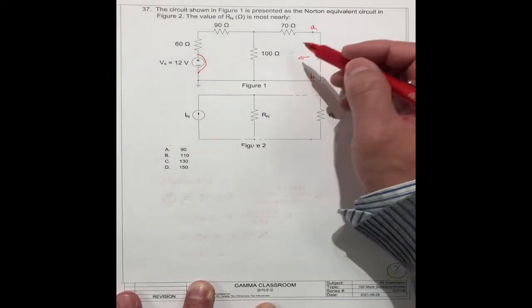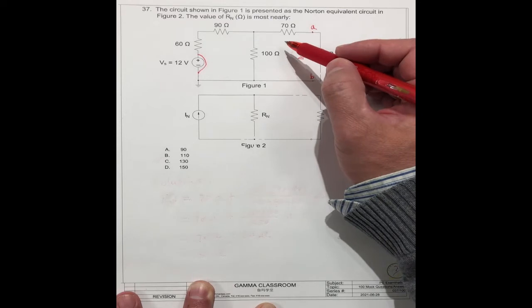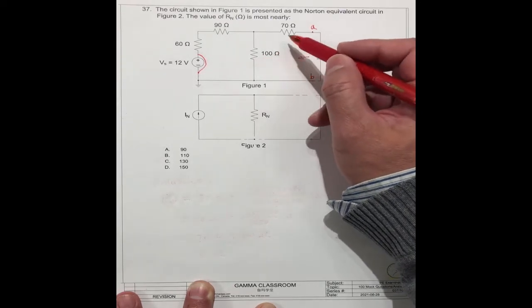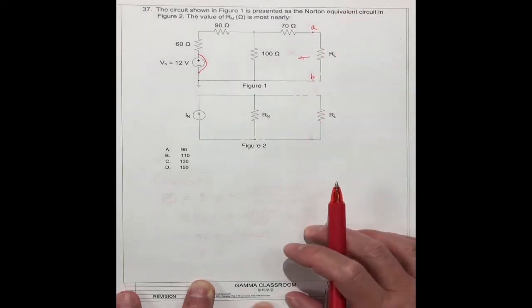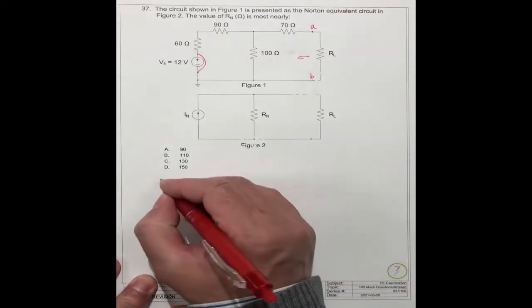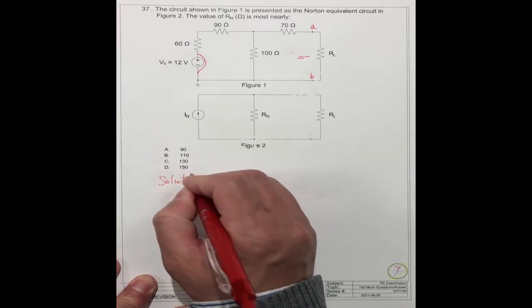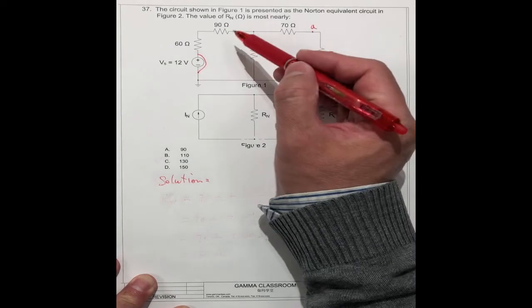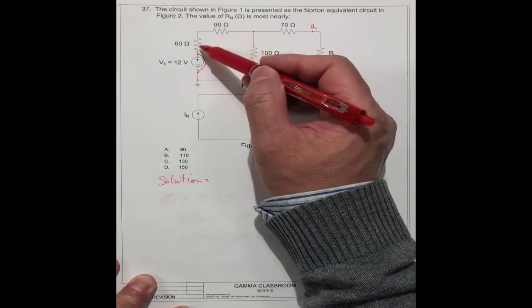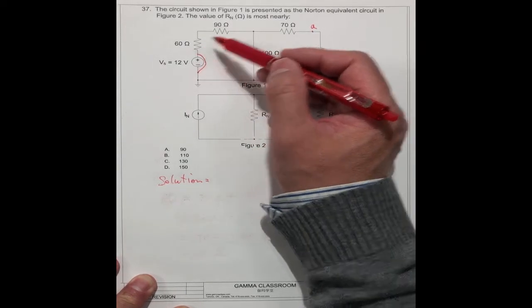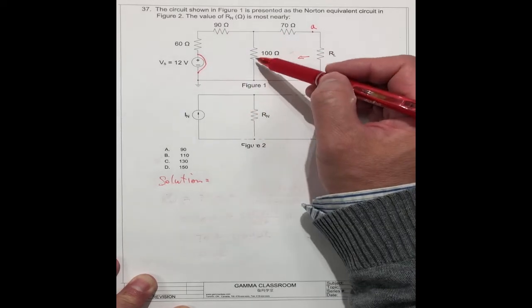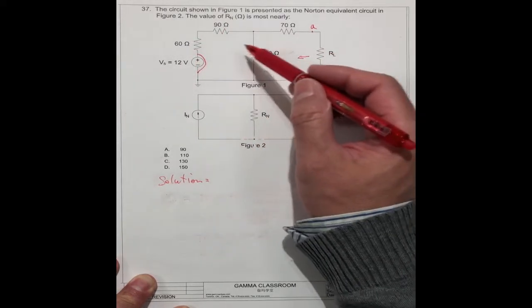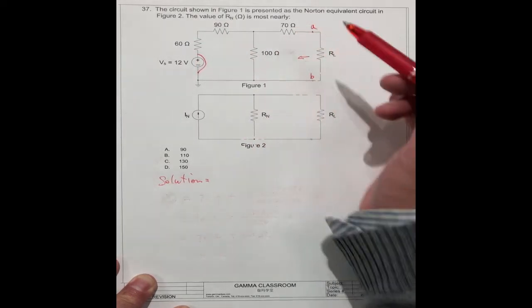Then according to the formula, you can find the equivalent. What is the total resistance? If you look at it this way, these two resistors — because this is shorted — are in series connection, and those two with this one is a parallel connection. And the whole three resistors connected with this one is a series connection.